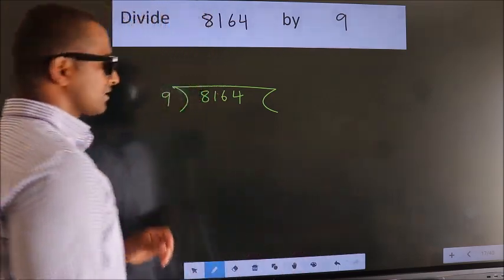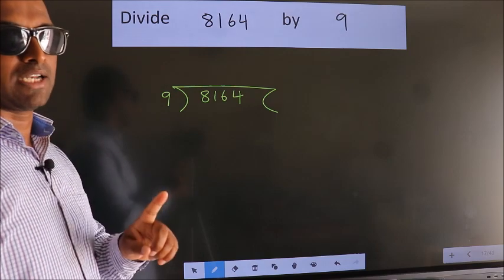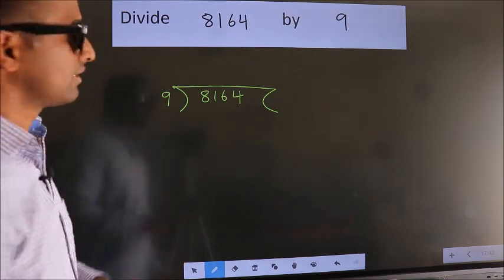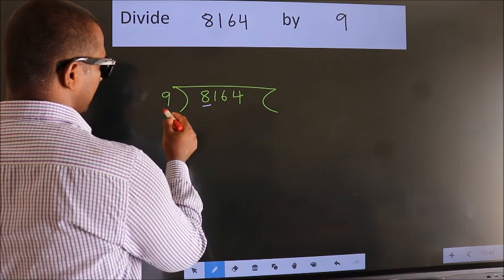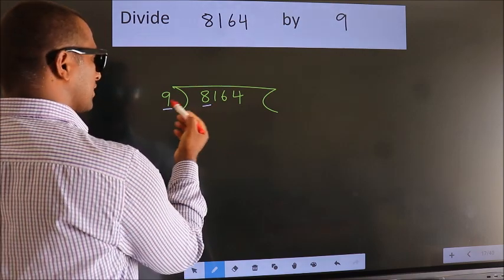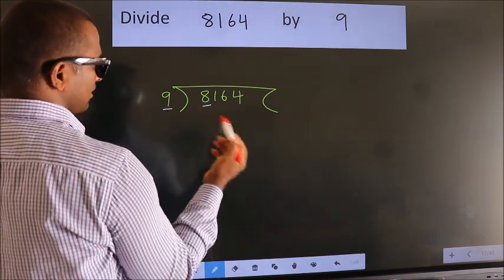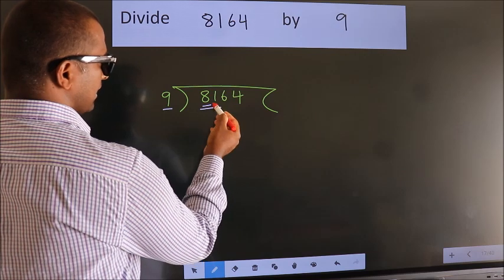This is your step 1. Next, here we have 8, here 9. 8 is smaller than 9, so we should take two numbers: 81.